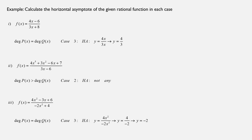Third example: f(x) equals (4x² minus 3x plus 6) over (negative 2x² plus 4). Both numerator and denominator have the same degree. The highest degree term of the numerator is 4x² and of the denominator is negative 2x². Dividing them leads to y equals 4x² over negative 2x² equals negative 2, which is the equation of the horizontal asymptote.